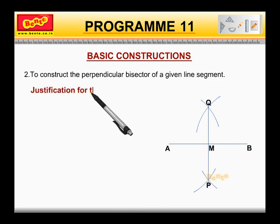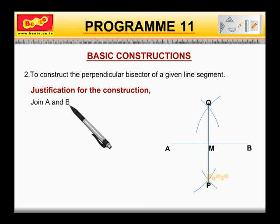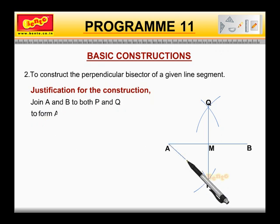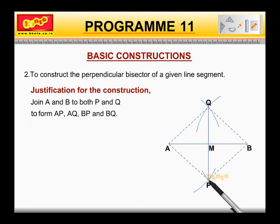Justification for the construction. Join A and B to both P and Q to form AP, AQ, BP and BQ. In triangles PAQ and PBQ,